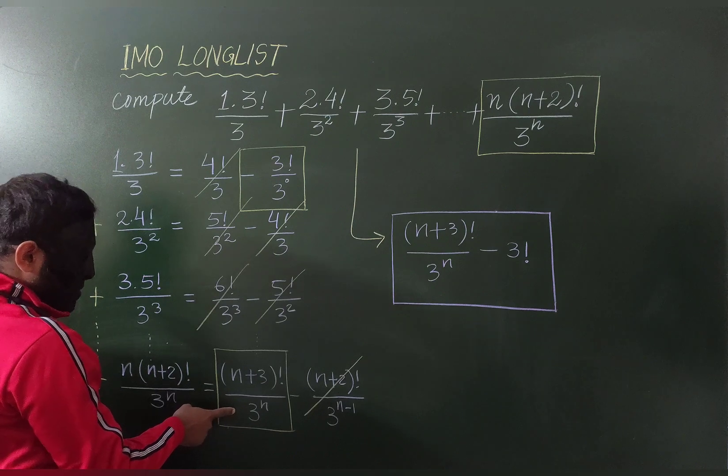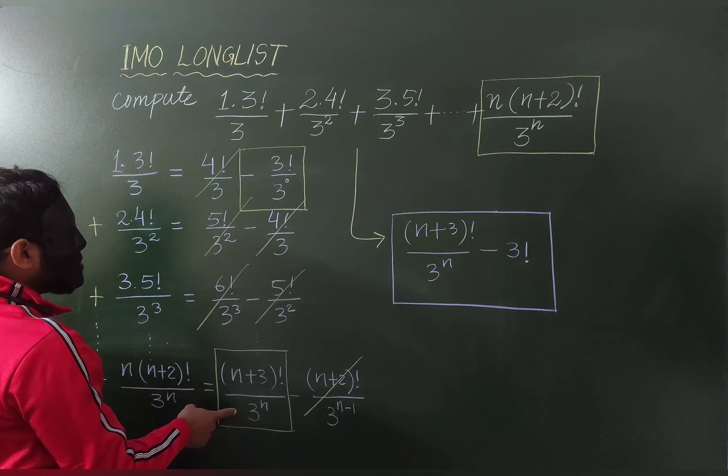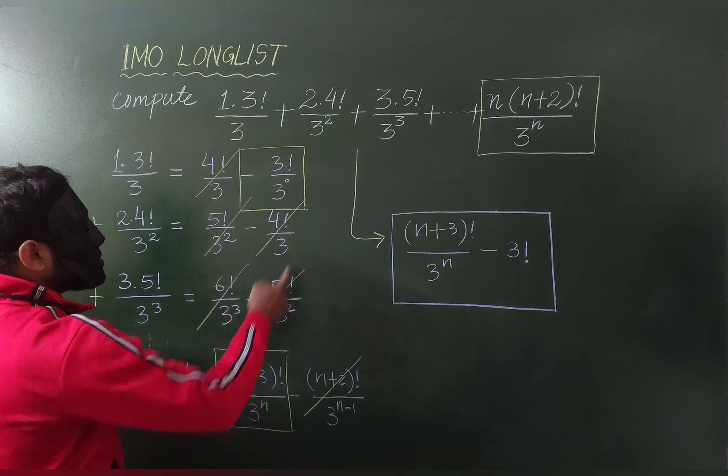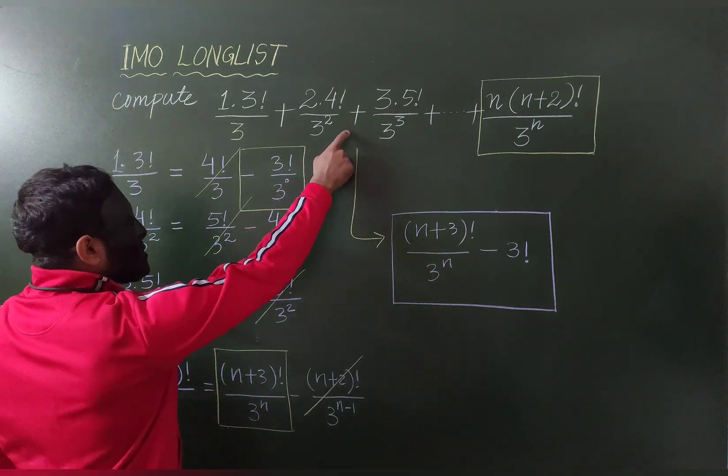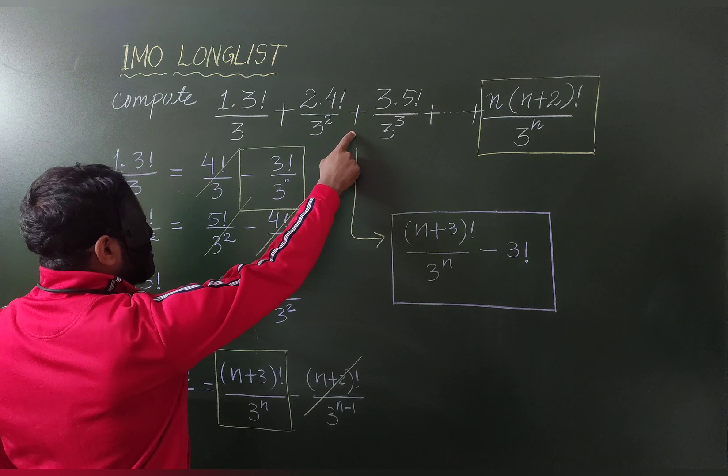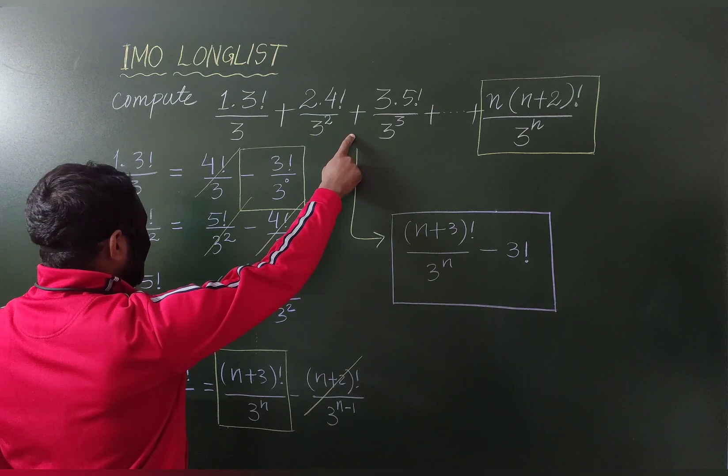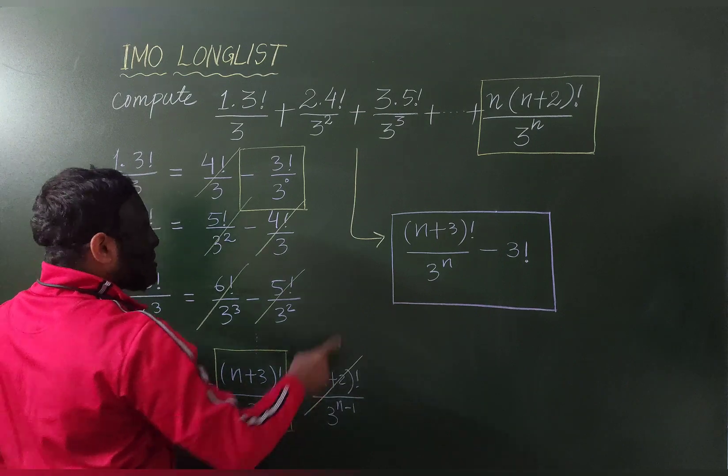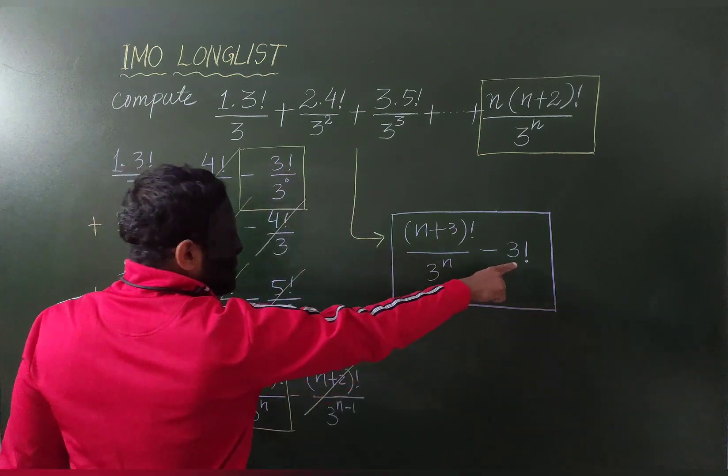Except these two everything will get cancelled by each other and thus the answer to this series will be the last one that is left, n plus 2 factorial by 3 to the power n, minus 3 factorial. This is the answer.